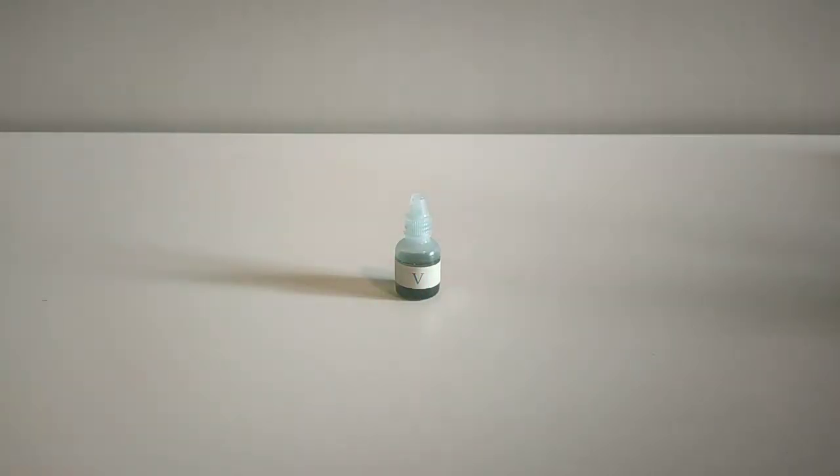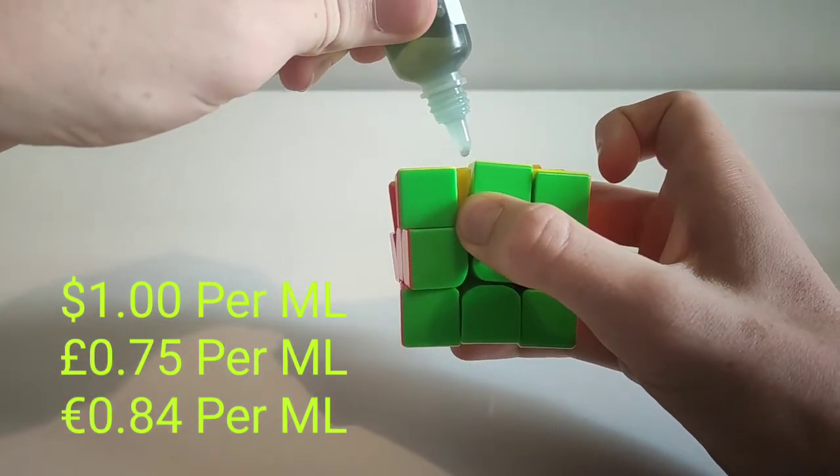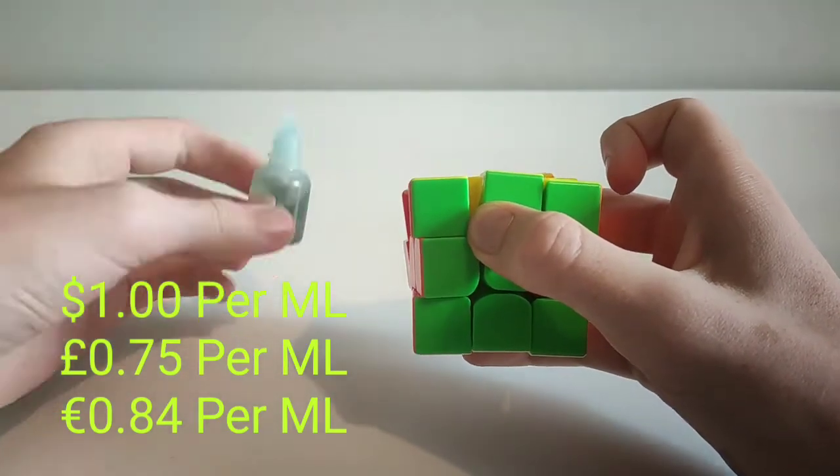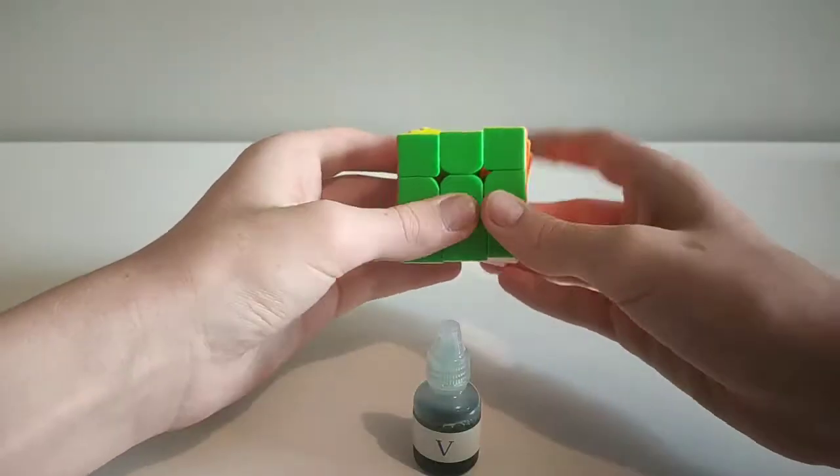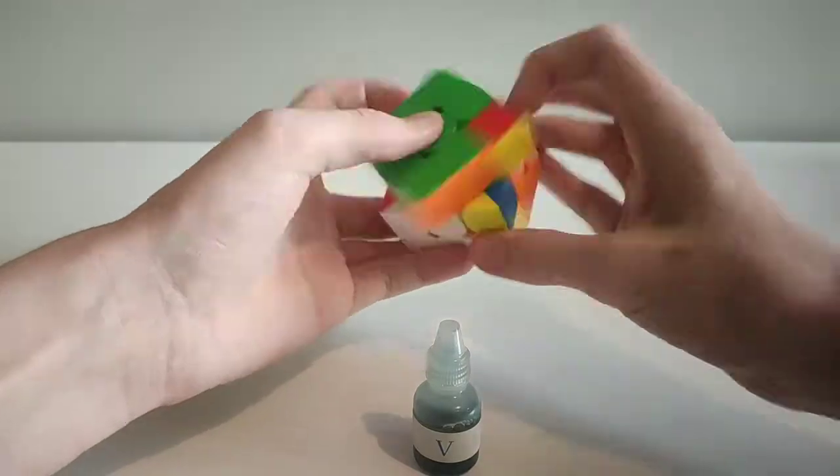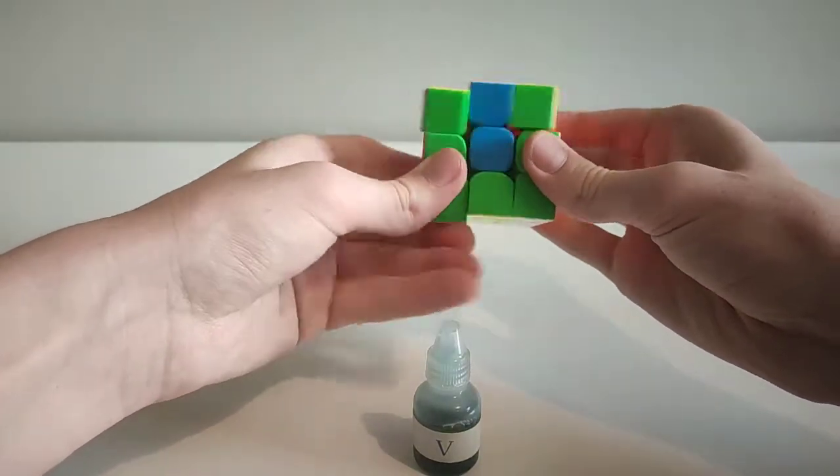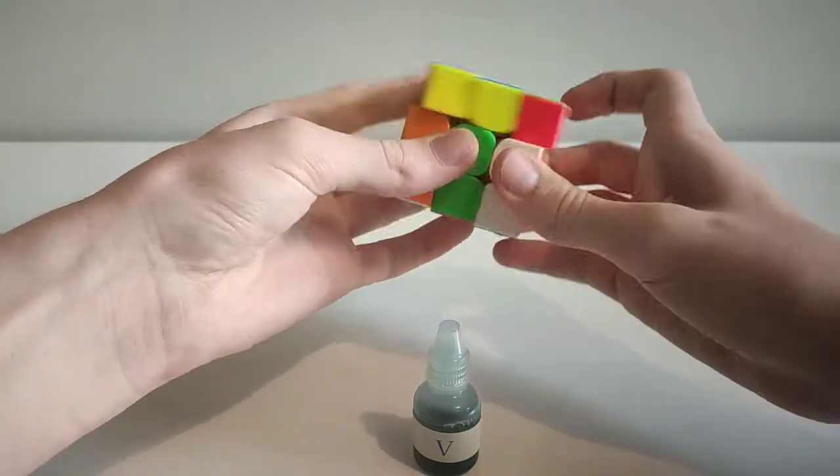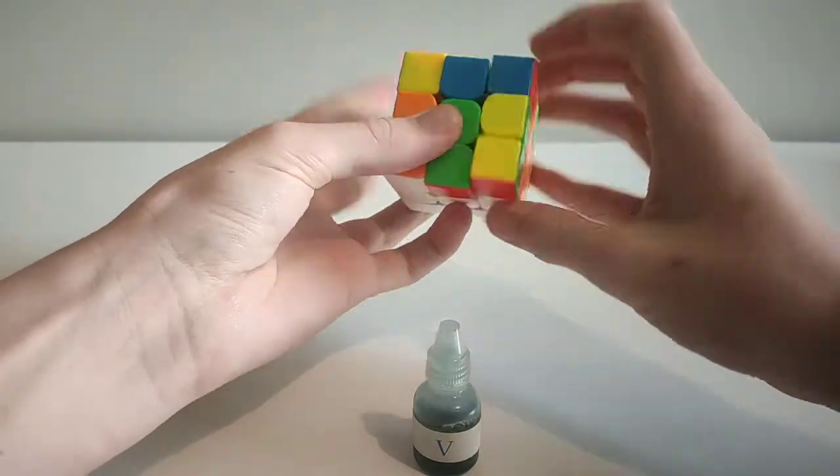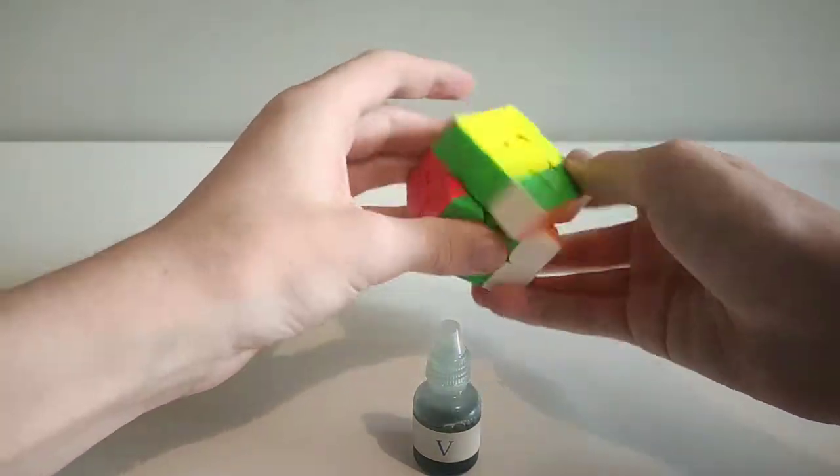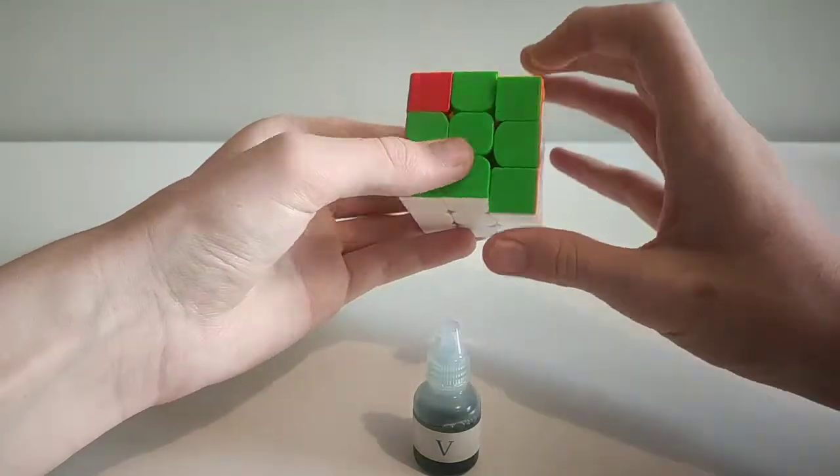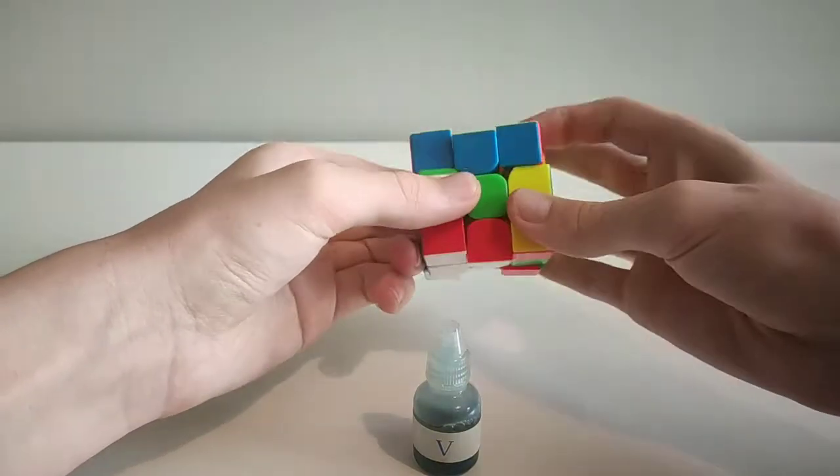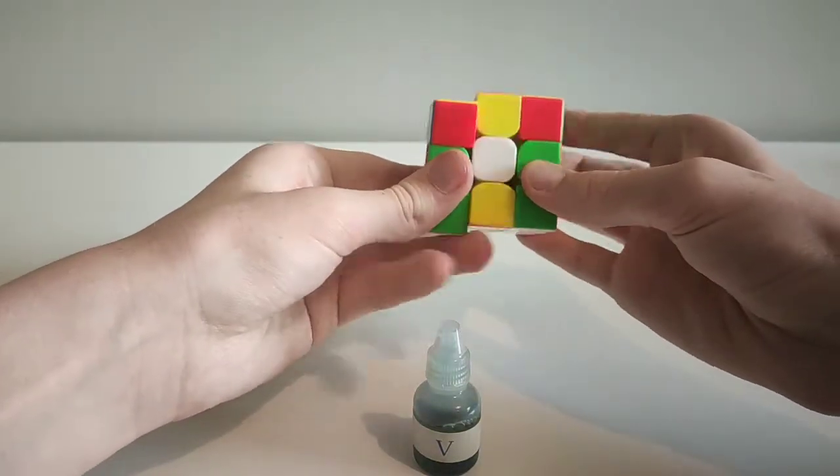Next we have angstrom compound V. Like most lubes, angstrom compound V makes the cube slightly smoother just because it reduces friction. The main quality of this lube however is speed. The cube gets a lot faster, especially if it is very slow. The lube speeds up the cube a lot, but does not make it uncontrollable. If the cube is already very fast, then you feel the smoothing effect more.